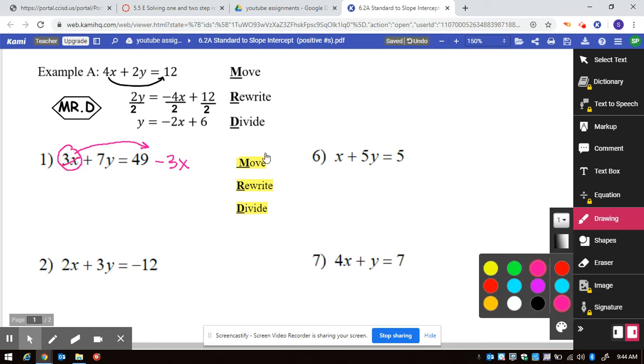After that, you will rewrite, and I like to rewrite it with the x up front. So this gives us 7y is equal to negative 3x, and that is a positive 49. So that's the rewrite.